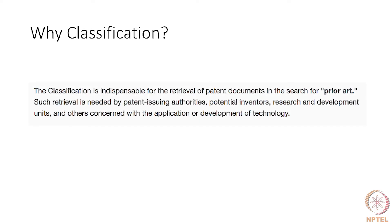Classification is indispensable for retrieving information on patents when you do a prior art search. Let's imagine a world without classification — the only way to look at prior art would be by searching using words, finding some key search terms. That is not the best way to look for prior art. Because prior art is codified and classified, we use classification codes to search for prior art.